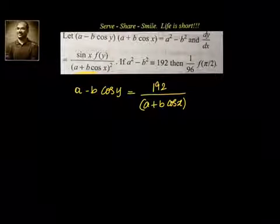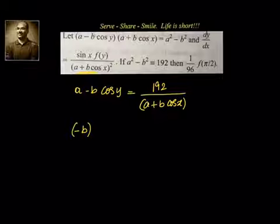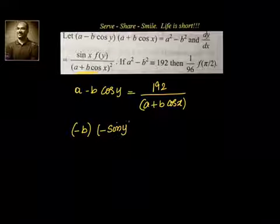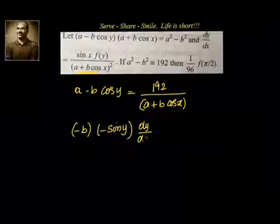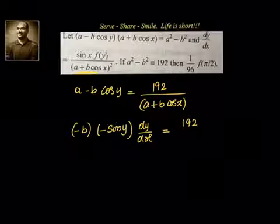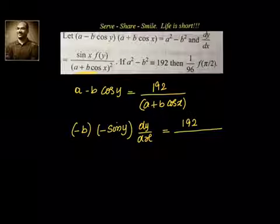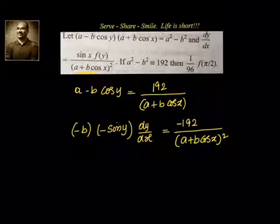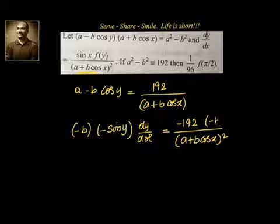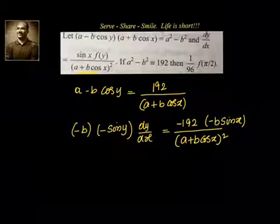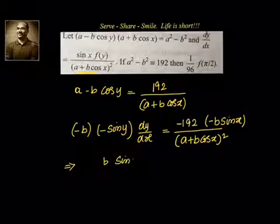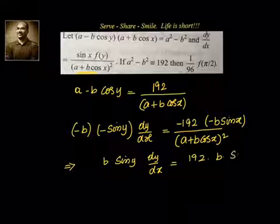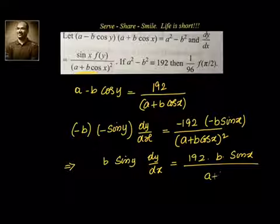Differentiating both sides: on the left, derivative of a is 0, and derivative of cos y is minus sin y, multiplied by dy/dx, with the constant b giving minus b · (minus sin y) · dy/dx. On the right, 192 is constant; 1/(a plus b cos x) differentiates like 1/x giving minus 1/(a plus b cos x)², and the derivative of b cos x is minus b sin x. So the right side becomes 192 · b · sin x / (a plus b cos x)².